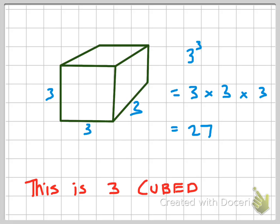Now the next one — this is cubed. Please excuse my drawing, but a cube has three dimensions: height, width, and depth. But everything stays the same. Basically there's three squares up the side, three squares along the bottom, and three squares down the back. So basically it's just three times three times three, or three cubed.